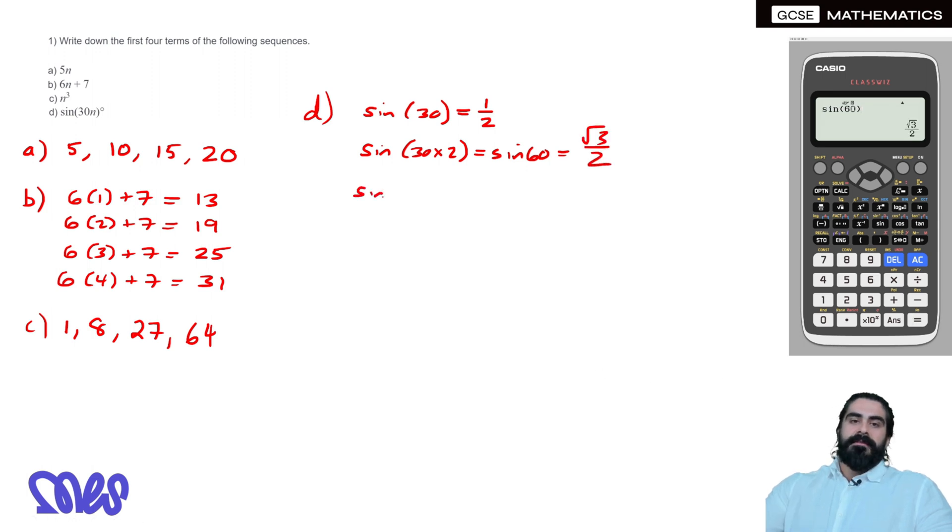You have root 3 over 2, then we're doing sine of 30 times 3, which is just sine of 90, which is 1, then we've got sine of 30 times 4, which is sine of 120, and again if you want to just type that in the calculator, you should get root 3 over 2 again though. And they are our 4 numbers in our sequence, half root 3 over 2, 1, and root 3 over 2.